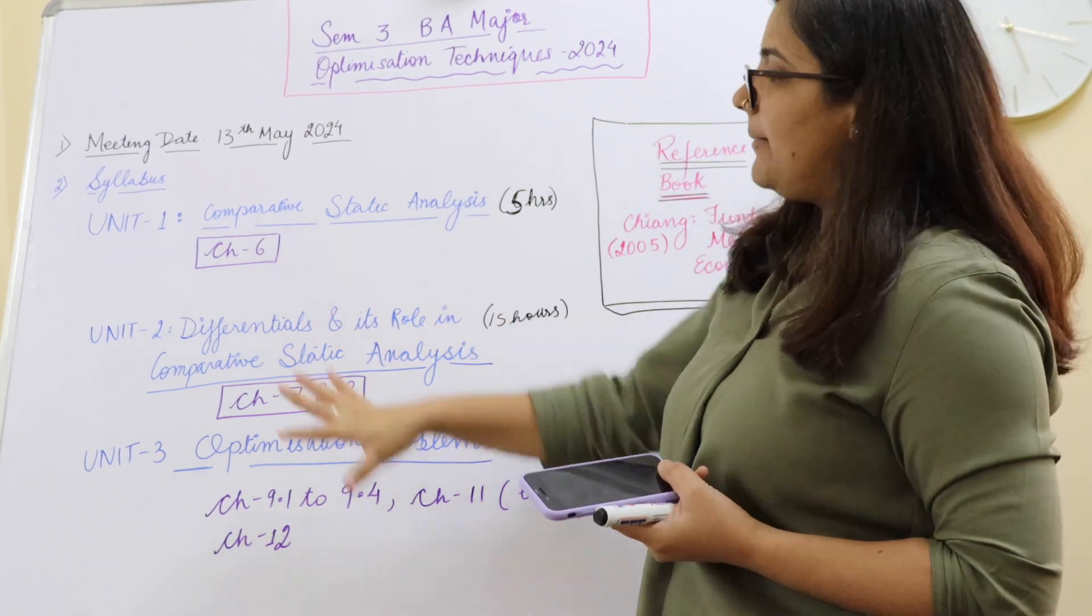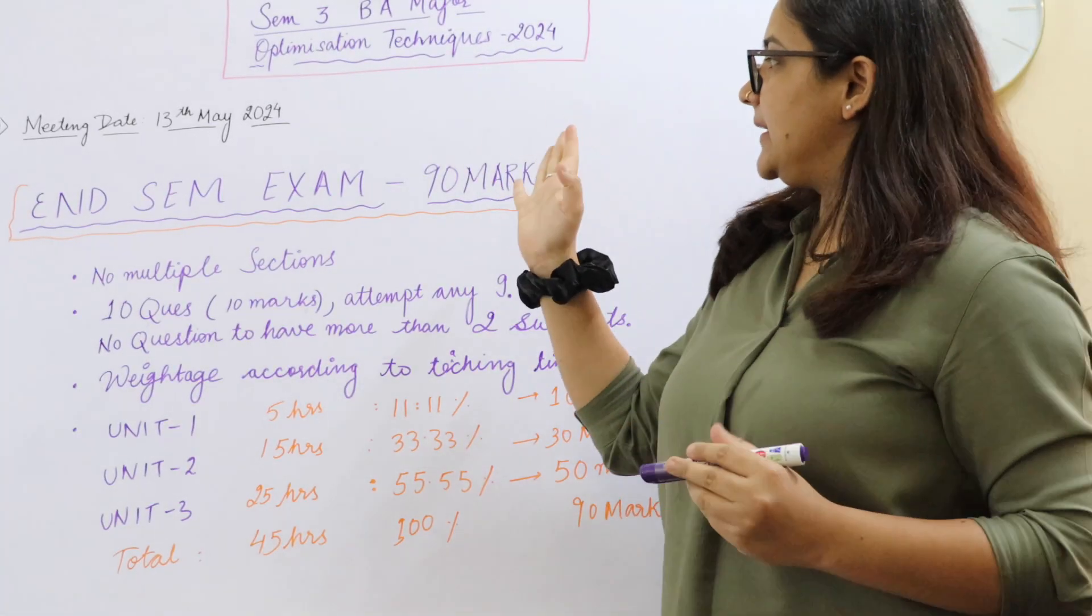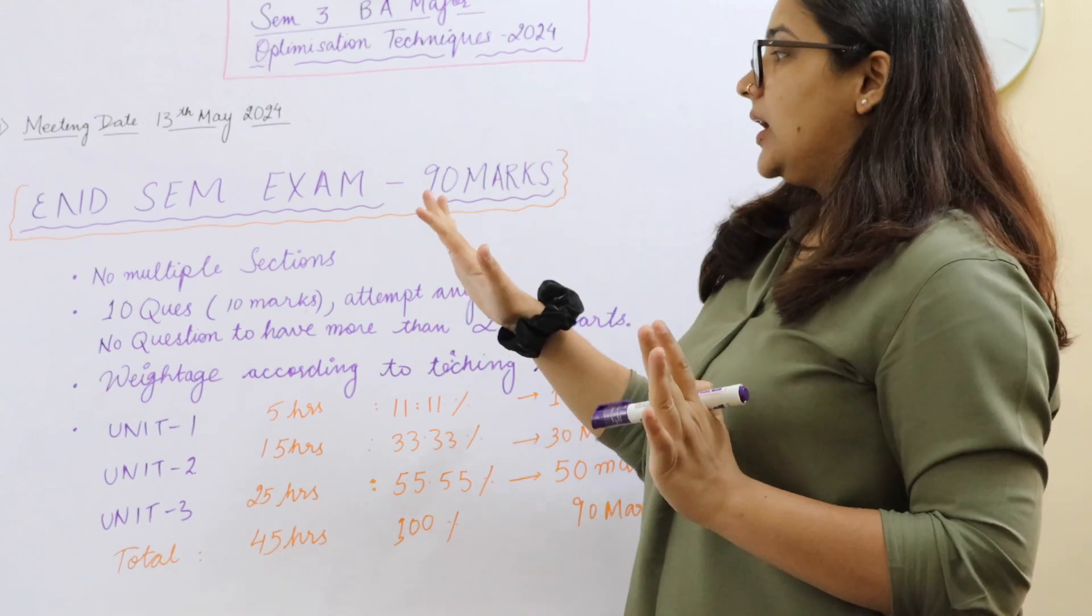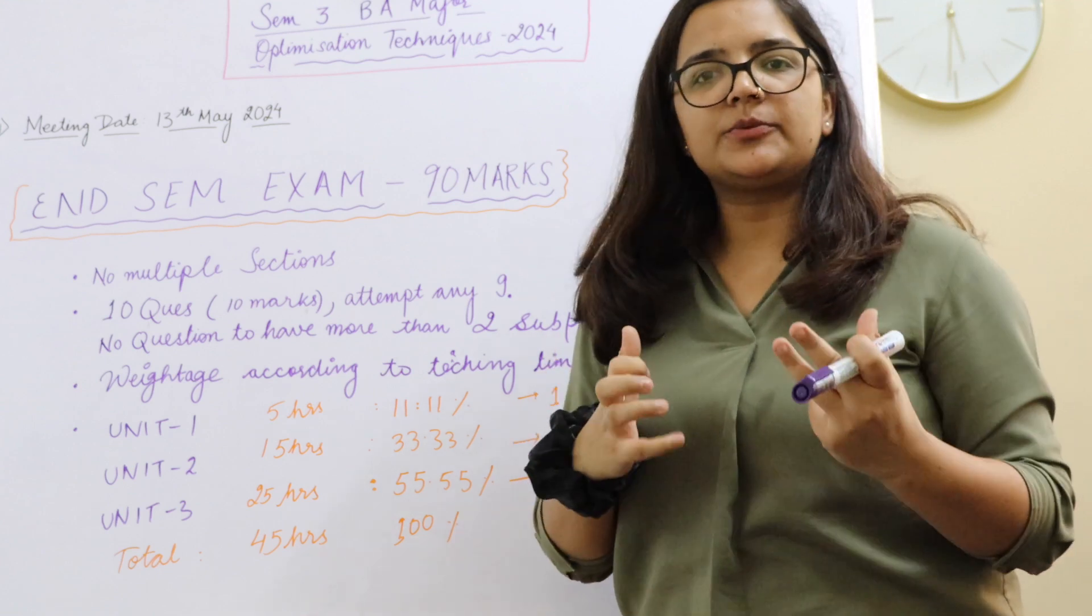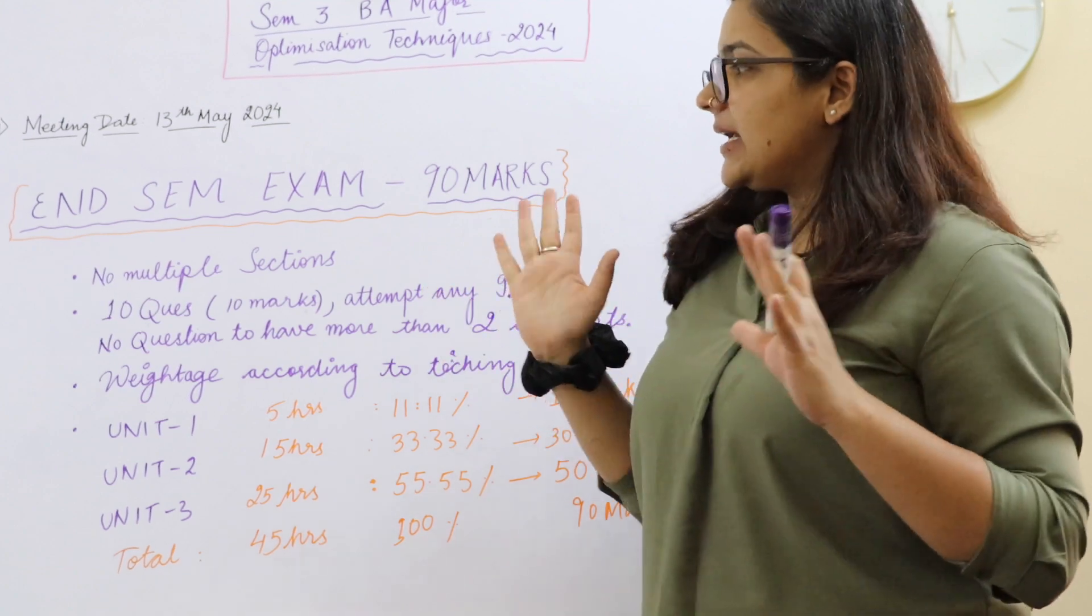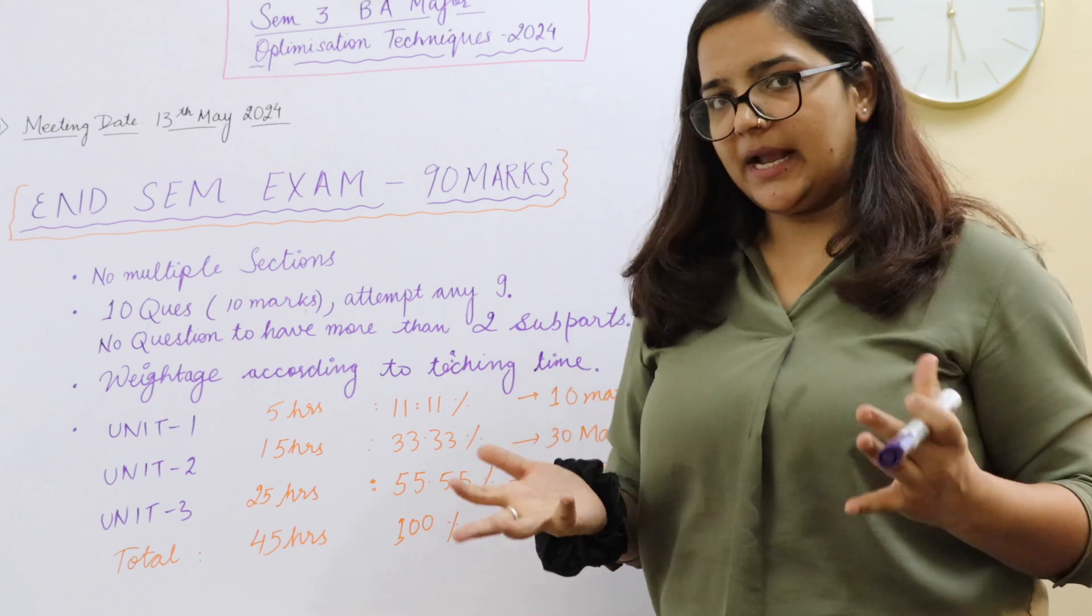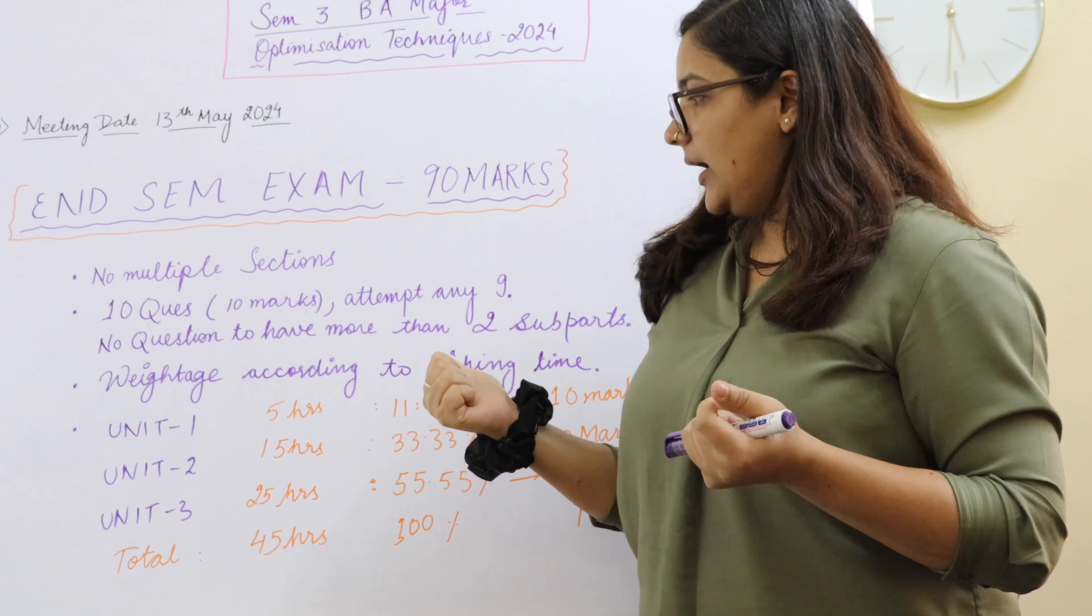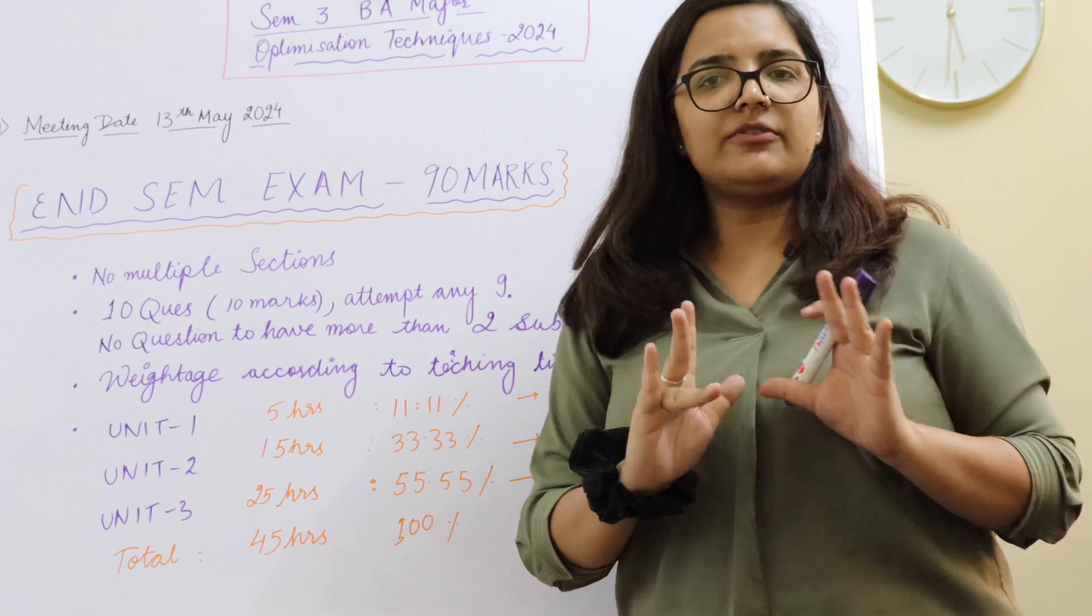Now we are going to talk about the exam pattern after we've gone through this. So final exam will be carrying 90 marks. There are a few pointers that you can keep in mind. First thing is you won't have multiple sections in your exam, so section A, section B, section C, this system won't be there. Your entire exam will have 10 questions each carrying 10 marks, out of which you will have to attempt 9 questions. So choice has also reduced quite a bit.